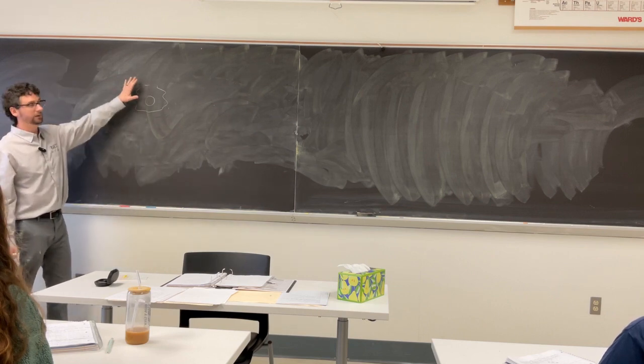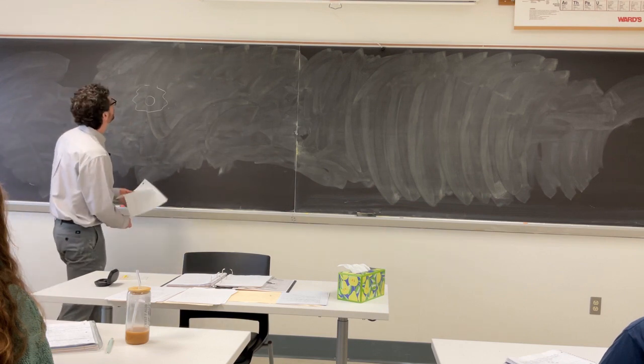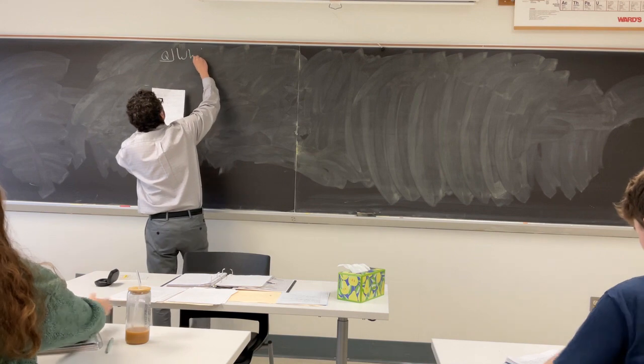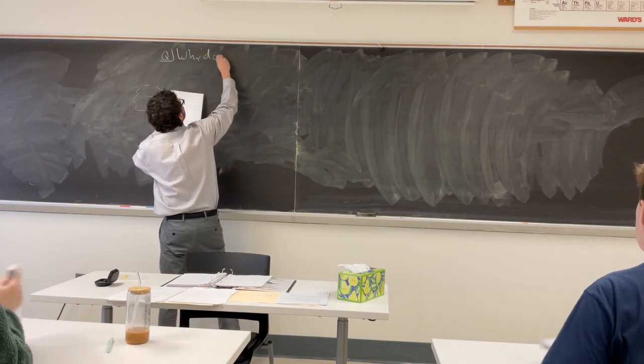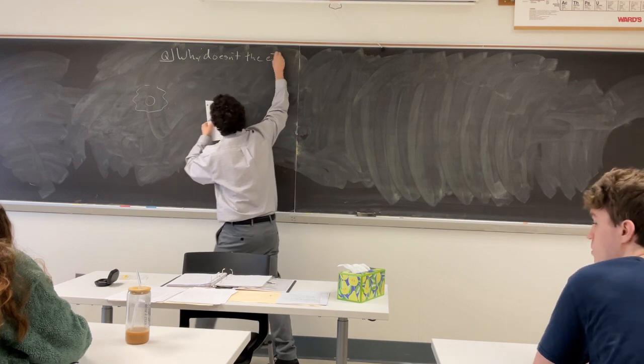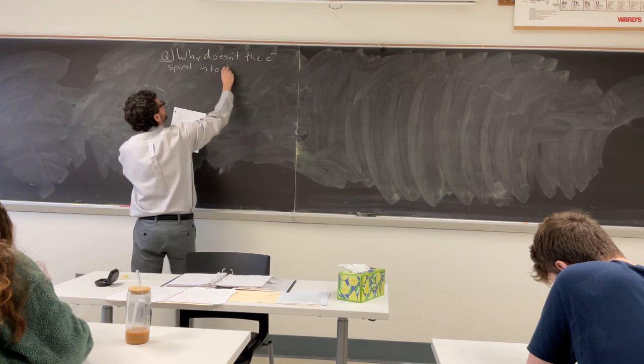We're going to use the uncertainty relationship to explain why that doesn't happen. So big question, why doesn't the electron spiral into the nucleus?